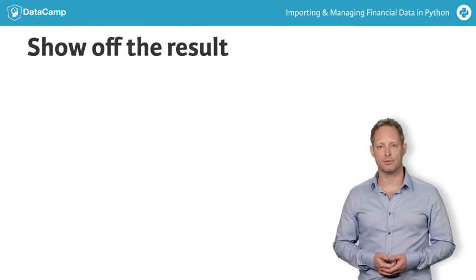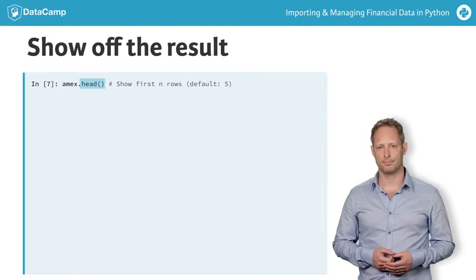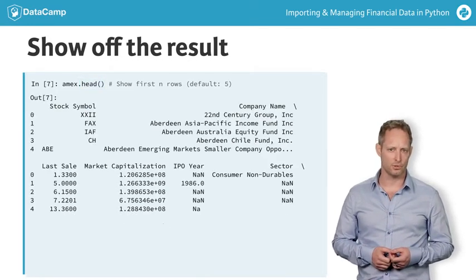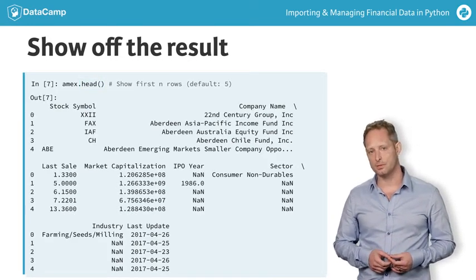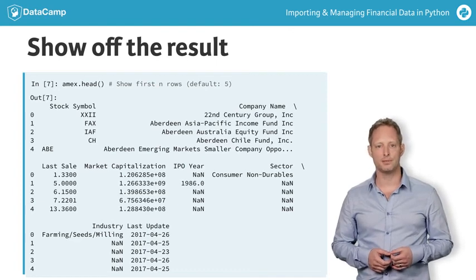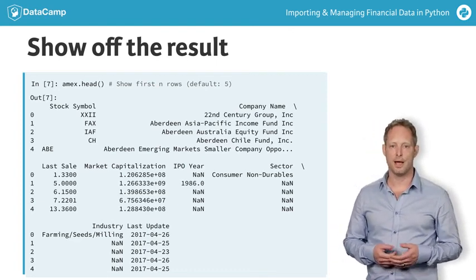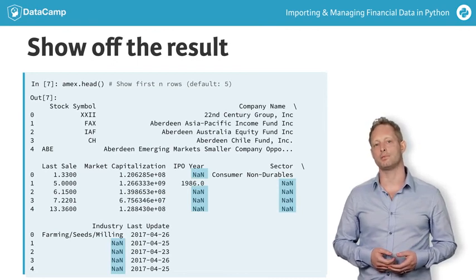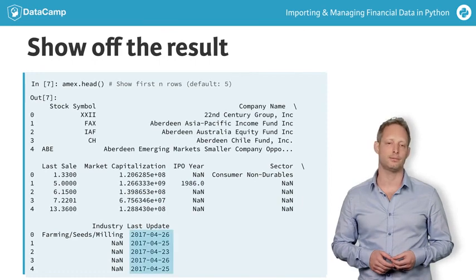To display the result of your import, use the method .head. It displays the content of the first few rows, defaulting to the first five rows, but you can pass an integer to display fewer or more rows. As you can see, the missing values are now represented as numpy NaN values, and the dates are also properly displayed.